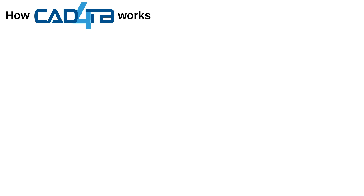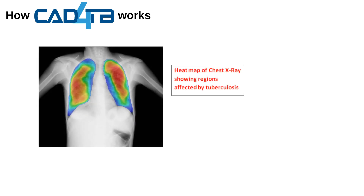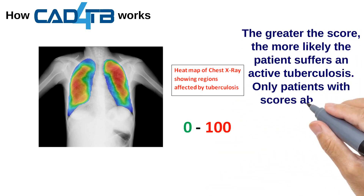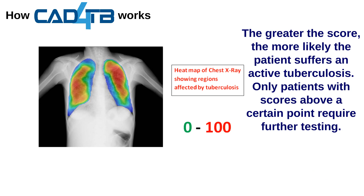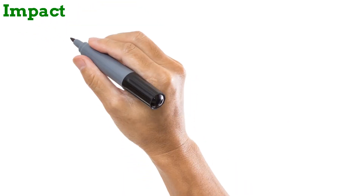When a chest X-ray image is acquired, it is analyzed within 30 seconds by the on-site or cloud-based CAD for TB software. A heat map of the image outlining abnormalities is produced, and a score of between 0 to 100 is also generated. A low score means that tuberculosis can be ruled out. On the other hand, a score above a certain level indicates a great likelihood of active tuberculosis, and only patients with scores in this high range require further testing with GeneXpert to completely confirm or rule out tuberculosis. This has tremendous impact on regions with limited availability of sophisticated testing methods.